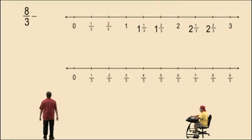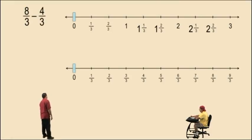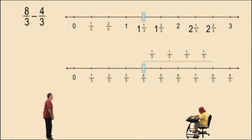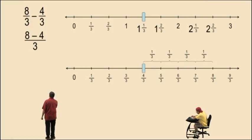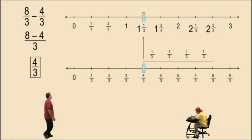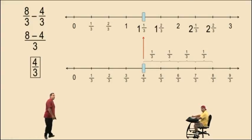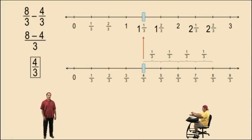Now suppose we have 8 thirds subtract 4 thirds. Well, if we have 8 thirds and we take away 4 thirds, we're obviously going to end up at 4 thirds. How do you show your work? We're working with thirds and now notice we work with the numerators: 8 subtract 4, and 8 subtract 4 is 4, so our answer is 4 thirds. That's a brief introduction of fractions, Part 1. We hope you come back for Part 2. See you again soon.